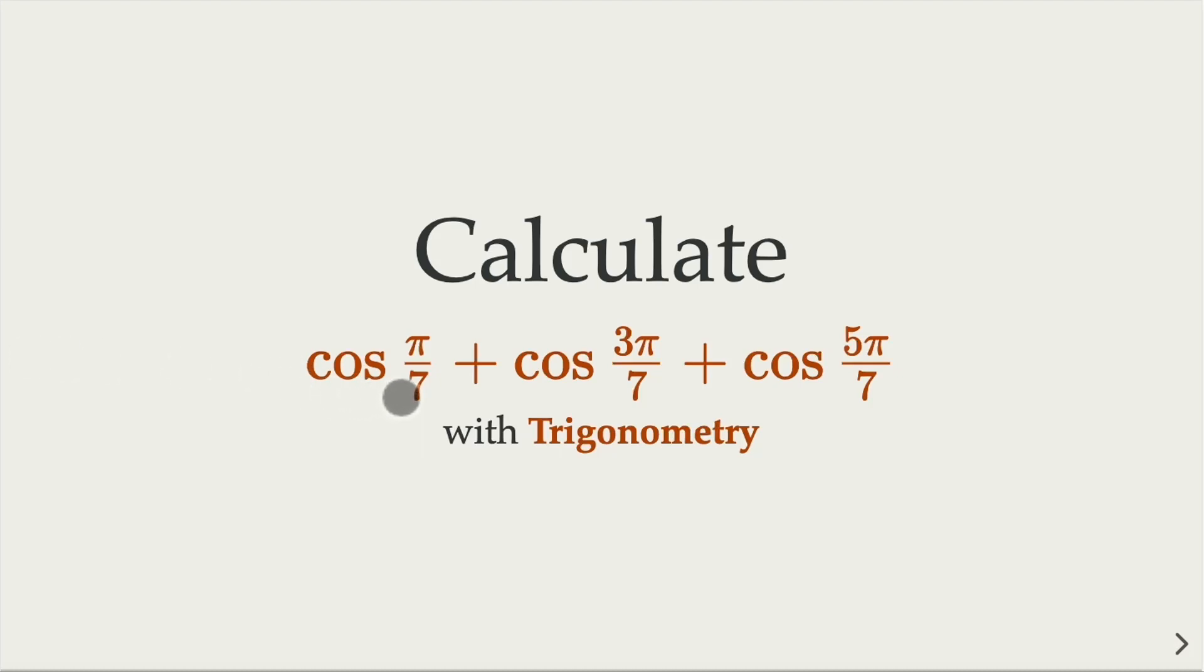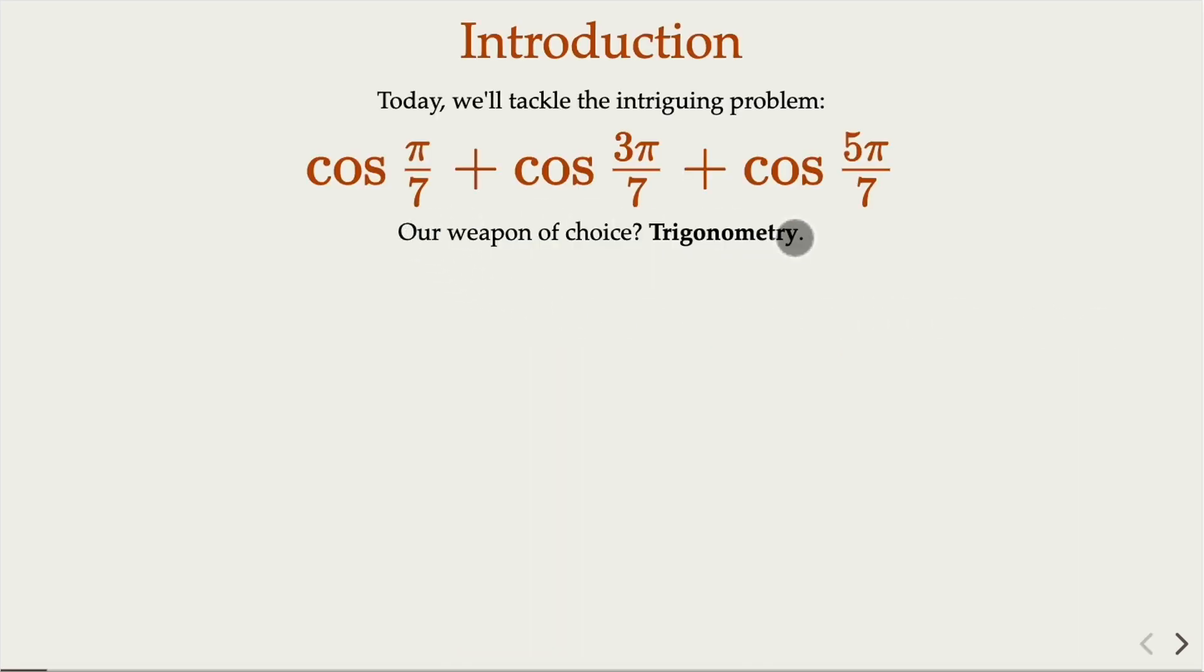We try to find the value for this expression here. That's the sum of cosine pi over 7, 3pi over 7, and 5pi over 7. We're going to use trigonometry today. All right, so that's the expression.